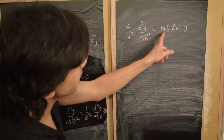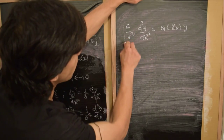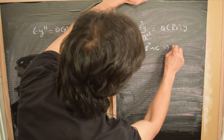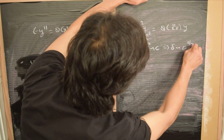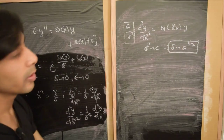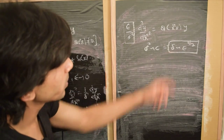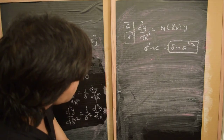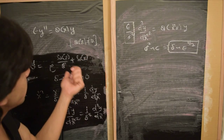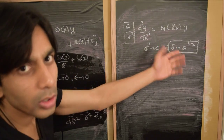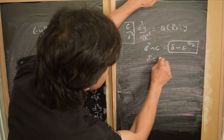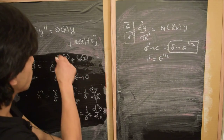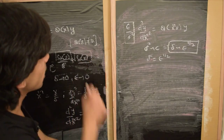We just have these two terms, and it's likely that they balance each other, especially since we are considering cases where q itself is non-zero. One way to achieve this balance is to make delta squared scale as epsilon, which means delta scales as epsilon to the power of one half. So we take delta equals epsilon to the power of half in this expansion, and now we need to work out what S₀ and S₁ are.